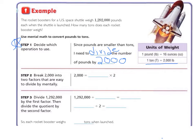Step 2. Break 2,000 into two factors that are easy to divide by mentally. So if we break up 2,000, as we see over here, we can break it into 1,000 times 2.